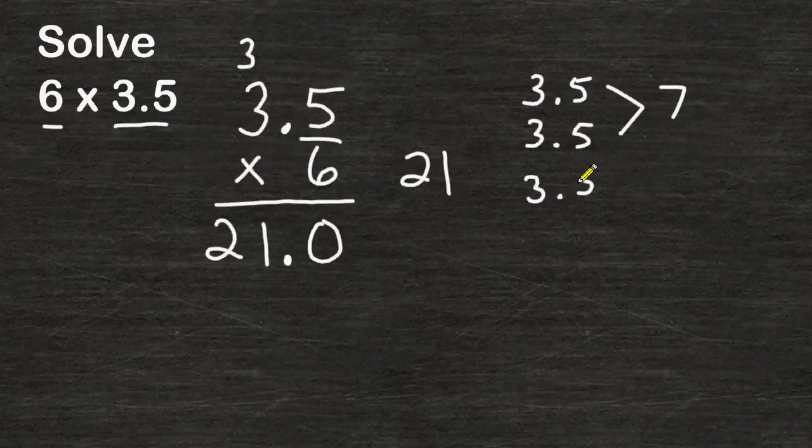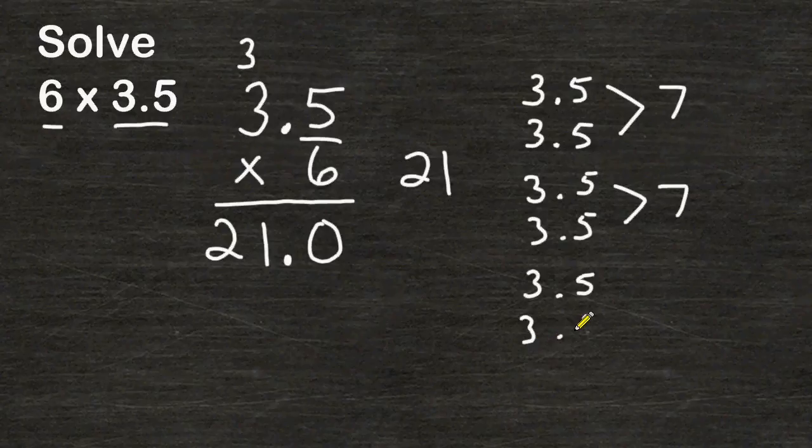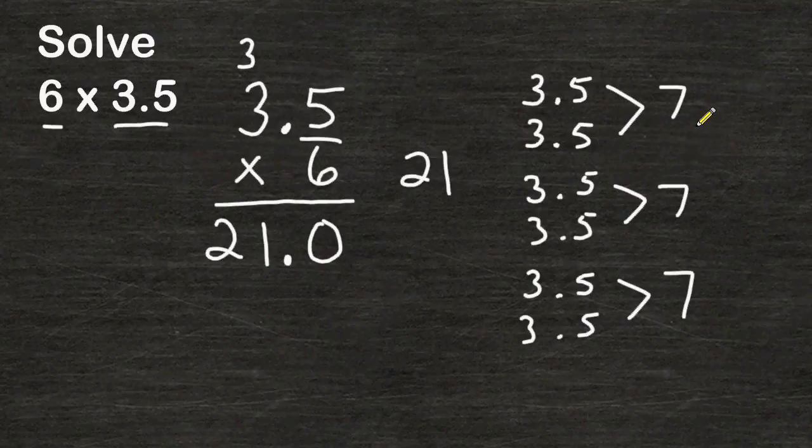So another pair of 3 and a half's would also be equivalent to 7, and then 2 more sets for a total of 6 sets would be another 7. So altogether we can see that we have 3 sevens, which is equivalent to 21 wholes.